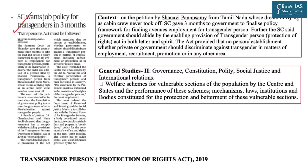Now let us begin with our second topic, which appeared at page number 12. The topic reads: 'Supreme Court wants job policy for transgenders in three months.' The context is that recently a petition was filed by Shanavi Panusami, who is a transgender, to fulfill the dream of flying as cabin crew in airlines. In the context of the Transgender Persons Protection of Rights Act passed by Parliament in 2019, the Supreme Court has directed the government to finalize the policy regarding employment avenues for transgenders.